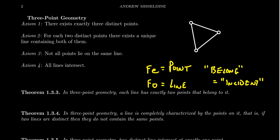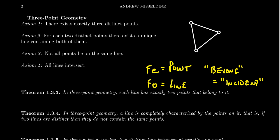I want you to convince yourself this is a model of three-point geometry. Axiom one: three points — great. For each pair of points, there exists a unique line containing both: for each pair you look at, there's only one line that contains both, so axiom two is satisfied. Axiom three: not all points lie on the same line — if you look at all three points together, there's no line that harbors all three, so the set of all points is non-collinear. And all lines intersect: if you take any two lines, they intersect at exactly one point. So this is in fact a model of three-point geometry and therefore also a model of Fee-Foe theory.